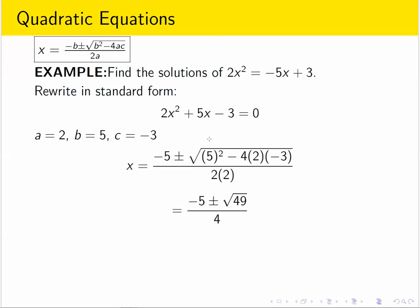5 squared is 25. 4 times 2 times 3 is 24. 25 and 24 give you 49. And again, we had two negative signs here. Negative times a negative is a positive. That's why we added instead of subtracting.